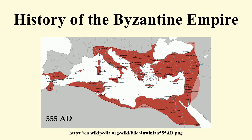Under Theodosius I, Christianity became the Empire's official state religion and others such as Roman polytheism were proscribed. And under the reign of Heraclius, the Empire's military and administration were restructured and adopted Greek for official use instead of Latin.